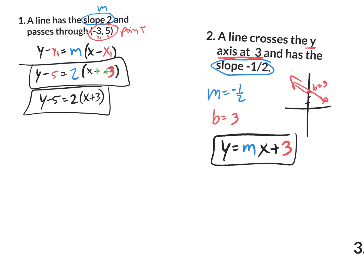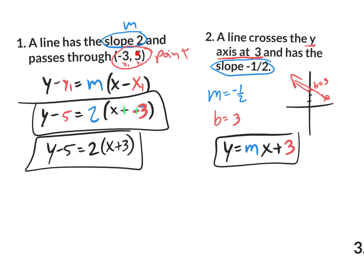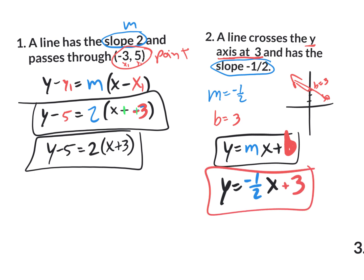So what's the difference between those two examples? On the first one they gave us a slope and a point — go with point-slope form. On the second one they give us a slope and a y-intercept — go with slope-intercept form. You need both forms memorized: point-slope is y minus y1 equals m times (x minus x1), and slope-intercept is y equals mx plus b.